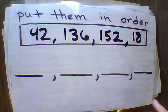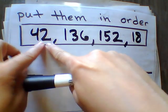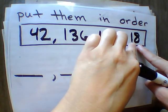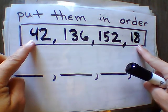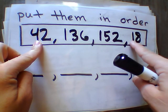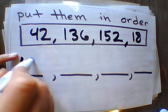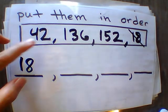All right. So I notice 2 digits, 3, 3, 2. So I'm starting with my 2 because they're the smaller. And I notice that 18 is the smaller. Then we have the 42.